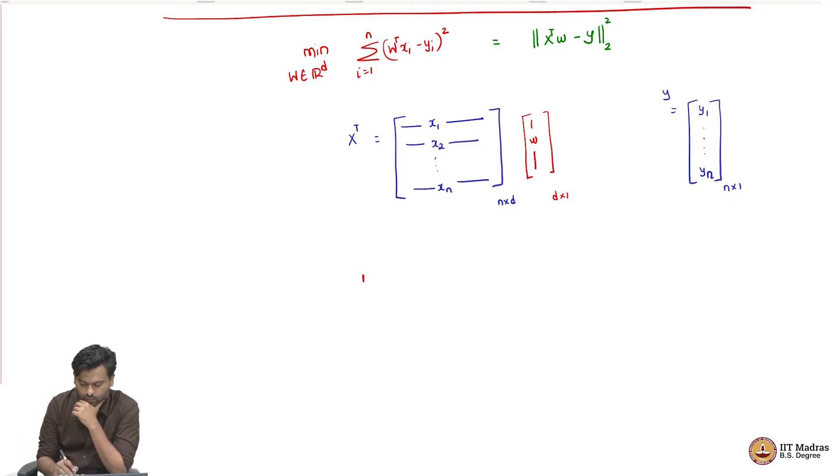Which means, basically, we want to minimize over W in Rd this quantity. The norm squared can also be written as vector transpose itself. Here, the vector of interest is X transpose W minus Y transpose X transpose W minus Y. If you think about this again, this is an unconstrained quadratic optimization problem.